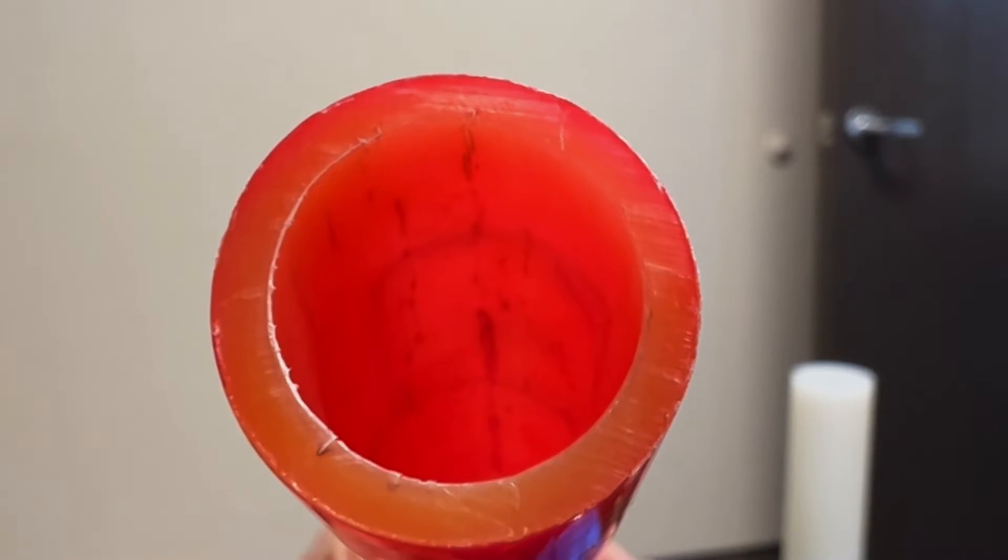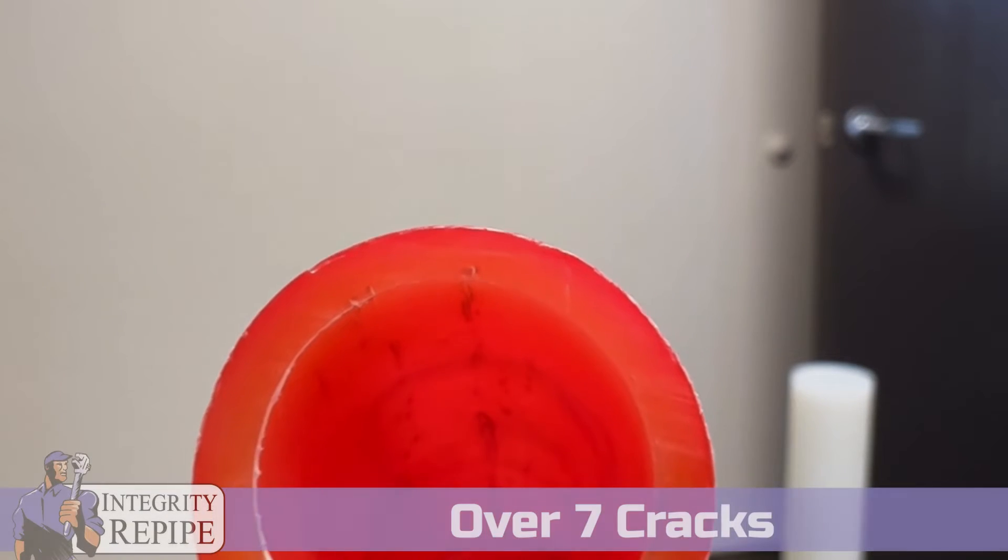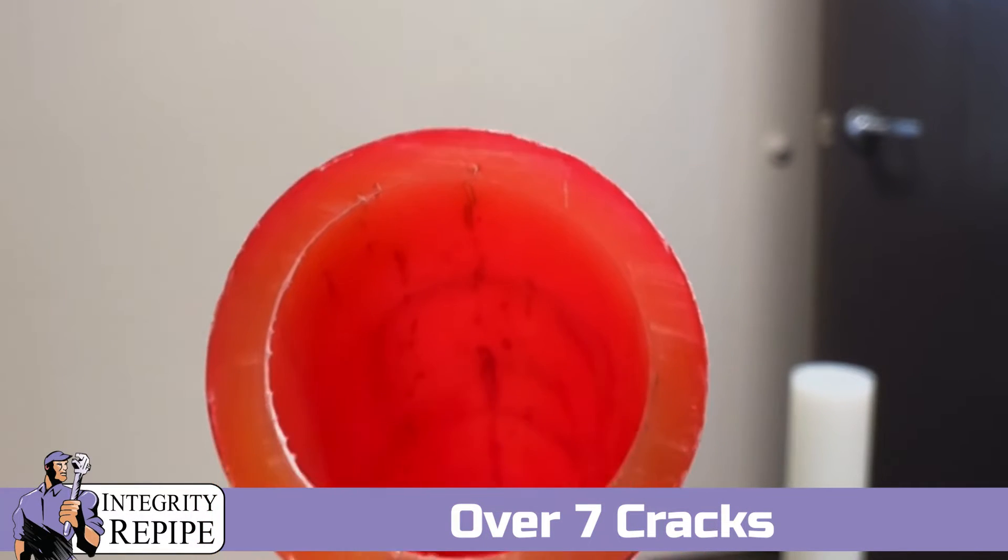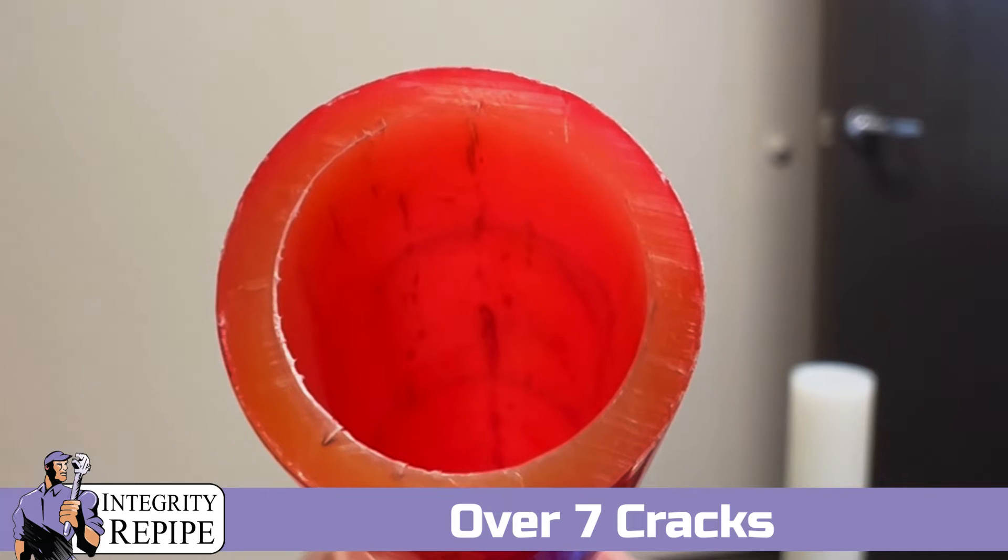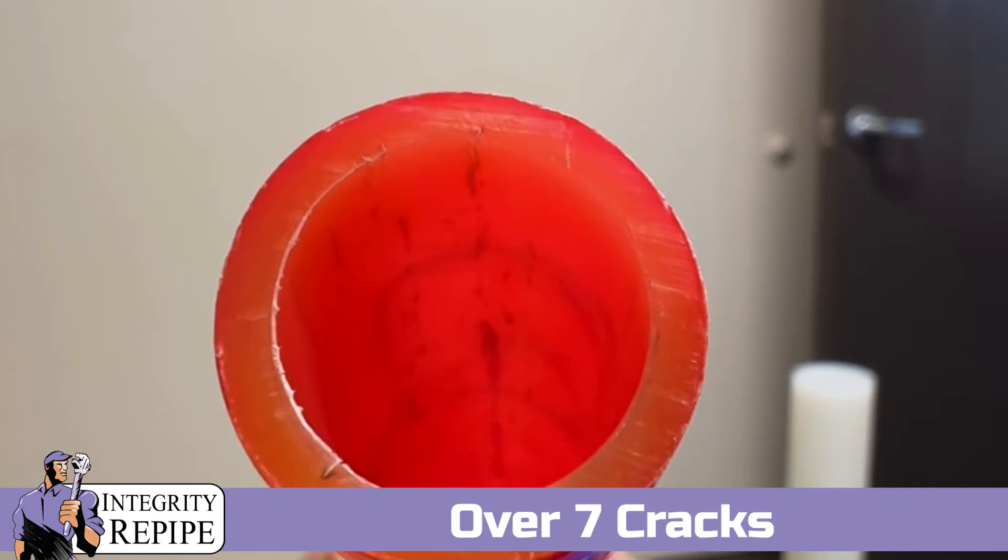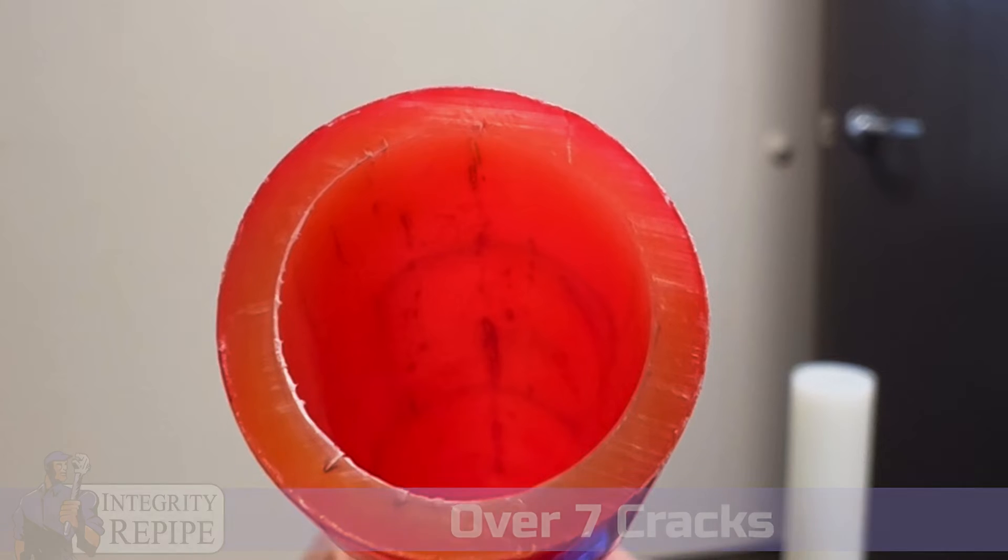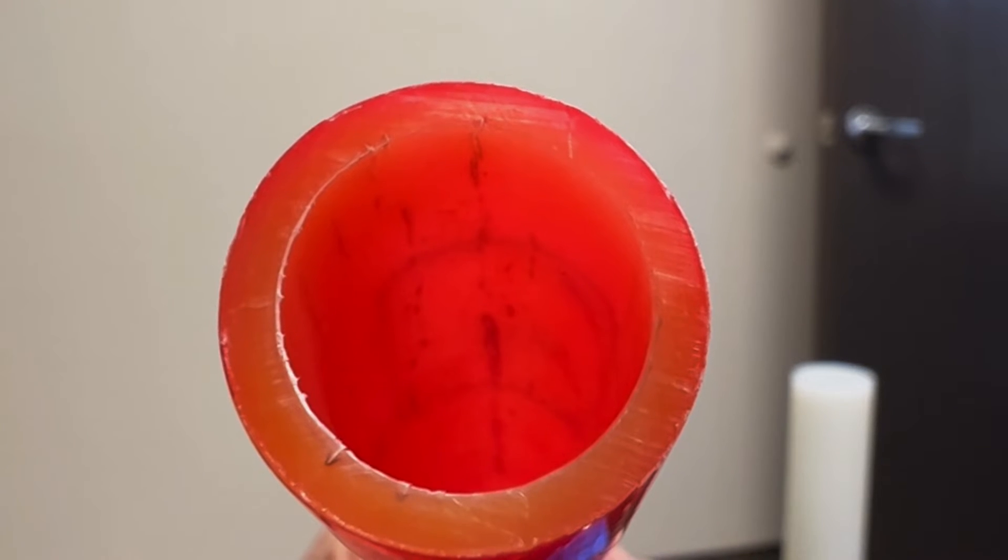Little cracks that are halfway through. Looks like there's one, two, three, four, five, six—yeah, six, seven, maybe more that you can see right here on the end of this pipe where it was cut.